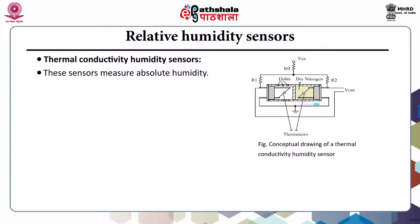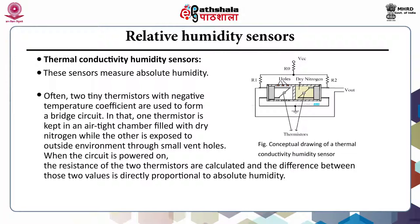The third type is thermal conductivity humidity sensors. These sensors measure absolute humidity instead of relative humidity. In this type, two tiny thermistors with negative temperature coefficients are used to form a bridge circuit. One thermistor is kept in an airtight chamber filled with dry nitrogen while the other is exposed to the outside environment through small vent holes. When the circuit is powered on, the resistance of the two thermistors is calculated and the difference between those two values is directly proportional to absolute humidity.